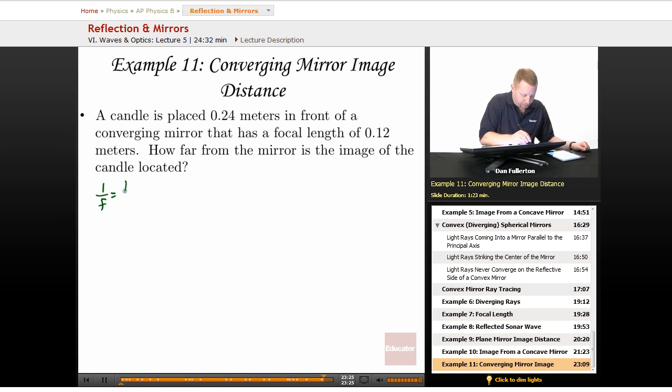1 over F equals 1 over DO plus 1 over DI, or if I do, I die. And we're looking for the image of the candle. So I'm going to rearrange this to say 1 over the image distance is equal to 1 over F minus 1 over the object distance. Then substitute in my values. 1 over DI is 1 over our focal length is 0.12, and our object distance is 0.24.